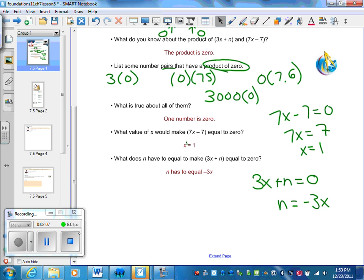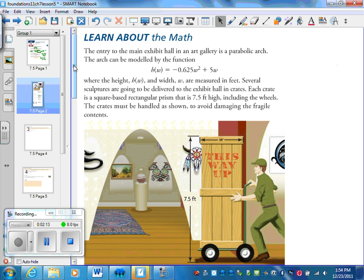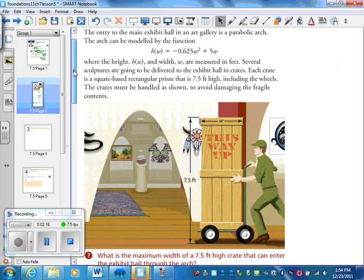We are on section 7.5 and we're going to do a problem that's in the textbook. So it would be a good idea to grab your textbook. We're going to read over a solution. The entry to the main exhibit hall in an art gallery is a parabolic arc. The arc can be modeled by the function h(w) equals negative 0.625w squared plus 5w, where height and width are measured in feet.